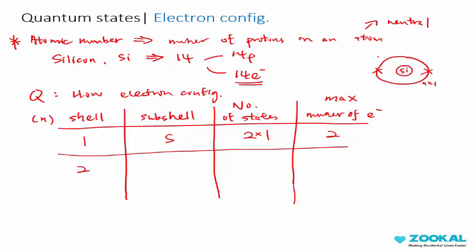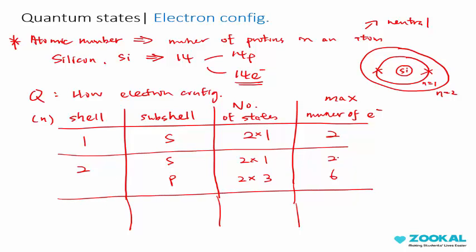You move into the second shell, which is n equals to 2. For the second shell, you have 2 subshells, which is S and P. Under S subshell, you have 2 times 1 states, so the maximum number of electrons under that state will be 2. P will have 2 times 3 states, which is 6 states, so you have 6 maximum number of electrons. Under shell 2, you have 8 electrons total.